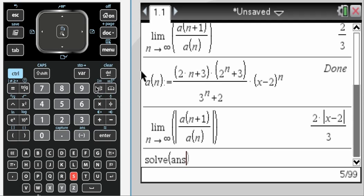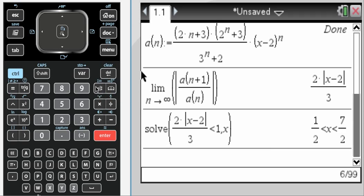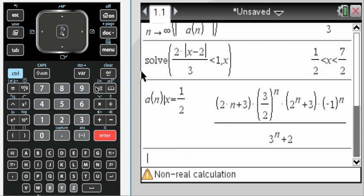And then I want to solve, remember that's menu 3, 1, the answer less than 1 for x. And it does that, and now what I can do is kind of go back up to a of n, where x equals 1 half. So I know it converges everywhere between 1 half and 7 halves.